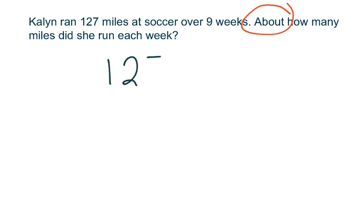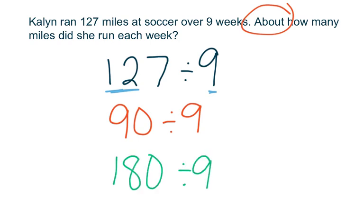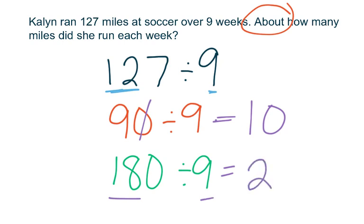Our division problem is 127 divided by 9. What compatible numbers could you use to solve this problem? If we're looking at the number 12 and we have our divisor of 9, we need to think 9 times what gets me close to 12. Well, 90 will be pretty close to 12 and then my next closest fact would be 180. If I did 90 divided by 9 and 180 divided by 9, I know that my actual quotient would fall between those two pieces. So 90 divided by 9: I think about 9 divided by 9, 9 goes into itself one time and I have my zero. My other problem is 18 divided by 9 and 9 goes into 18 two times, and I have my zero.